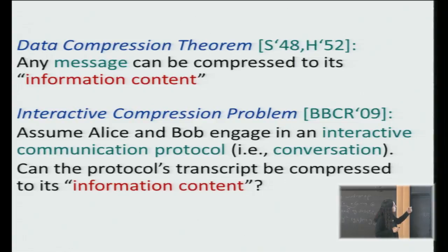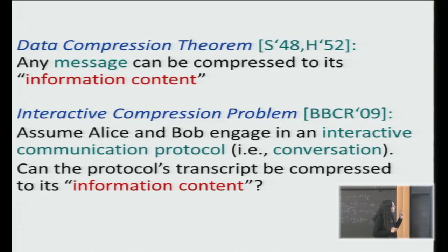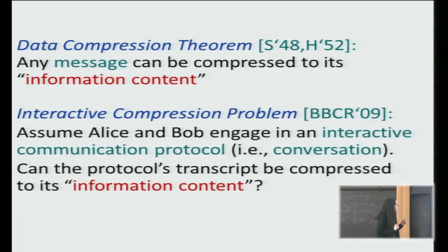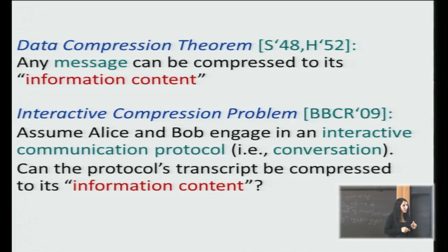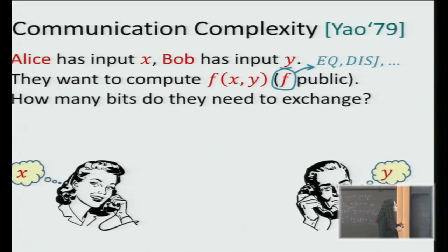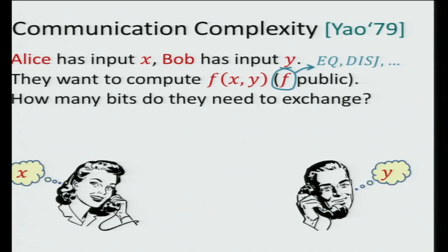What we want to consider now is the interactive analog of data compression, called the interactive compression problem. In this problem we assume that Alice and Bob engage in an interactive communication protocol. Before, Alice just sent some message to Bob and Bob didn't do anything, but now Bob can answer, then Alice can send something else, and they can have a conversation. The question is whether the transcript of every protocol can be compressed to its information content — whether you can take this conversation and find a shorter conversation that conveys the same kind of information. To formally formulate this problem we'll use the setting of communication complexity, a very successful subfield of theoretical computer science with many applications.